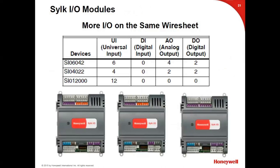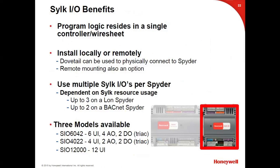Here are the Silk I/O modules. We kept the same naming convention: SIO, followed by three models — 60, 42, 40, 22, and 12-0-0-0 (meaning 12 universal inputs and no other I/O). The program logic resides in the controller — the I/O modules are essentially dumb I/O that you connect to the controller via the Silk bus. You can mount them right next to the controller or remote mount them. We're limited to three on a LON spider and two on a BACnet spider due to processor and memory constraints.